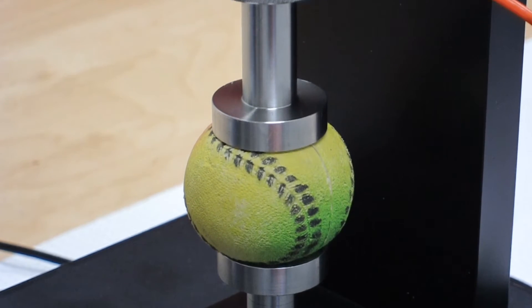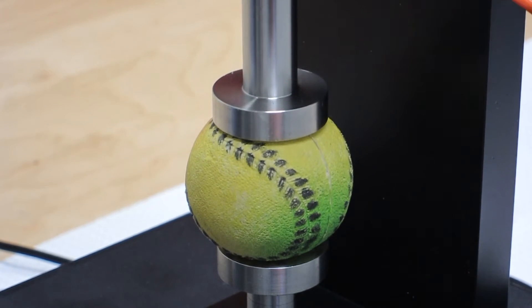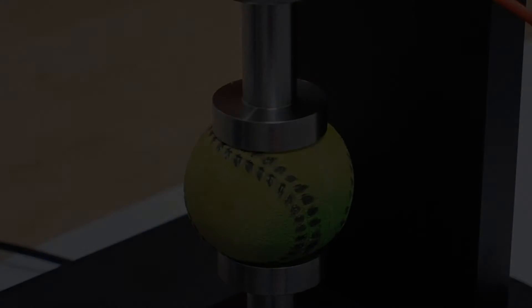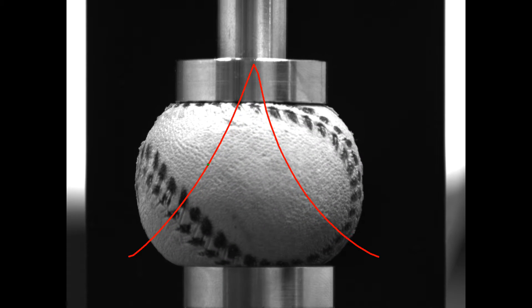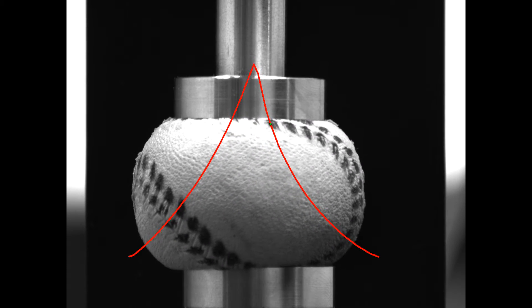Let's start by looking at the classic example, a parallel plate compression test of a rubber ball. This ball is about 50 millimeters in size and we're applying about 200 Newtons of force to do the compression.